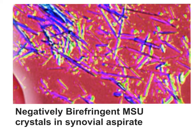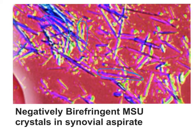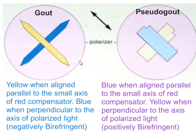Here is the picture showing negatively birefringent monosodium urate crystals. You can see the crystals appearing in yellow and blue colors — they are needle-shaped, with sharp needle or toothpick shape. These are negatively birefringent monosodium urate crystals in synovial fluid. To explain negatively birefringent, I would also like to explain the difference between gout and pseudogout with respect to the crystals seen, as pseudogout is a similar condition to gout but with different causes and crystal composition.